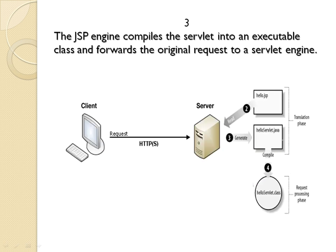After that, the servlet must be compiled. The JSP engine compiles the servlet into an executable class. So initially we have a .JSP file, then a .java file, and then a .class file. The Java file is compiled and converted to the HelloServlet.class file. This is the request processing phase. In the translation phase, the JSP page is translated to Java code; in the request processing phase, the servlet source code is compiled into the class file.